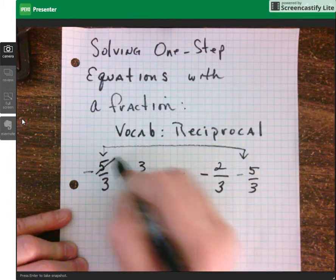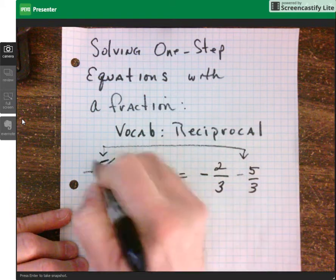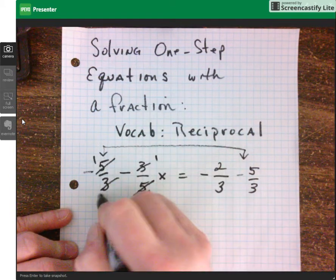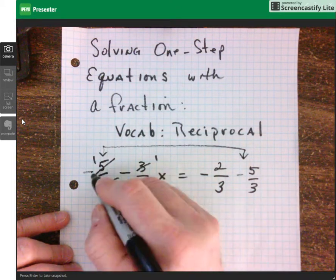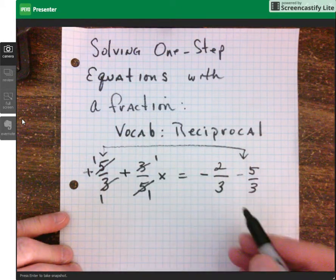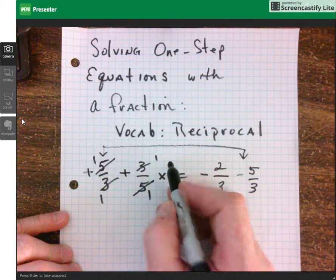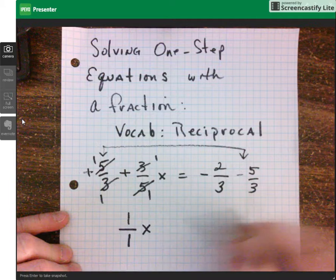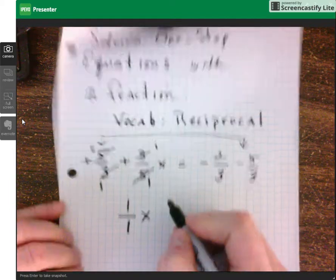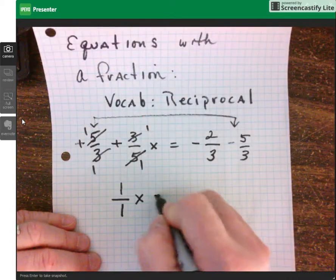Okay, so what's going to happen is our 5s are going to cancel and become 1s. Our 3s will become 1s as well by cancellation, and the two negatives will cancel each other out. 1 times 1 in the numerator, 1 times 1 in the denominator, and our x equals.